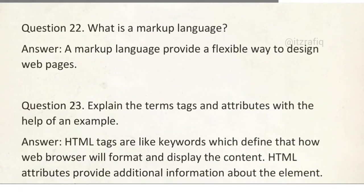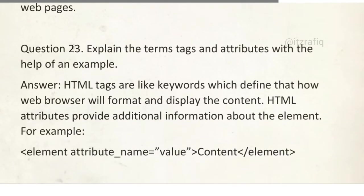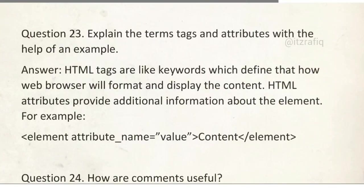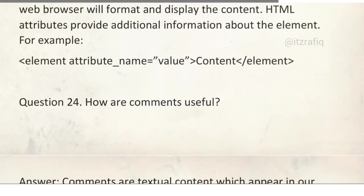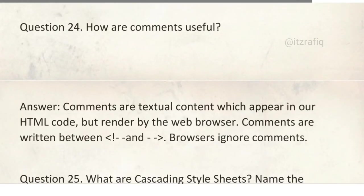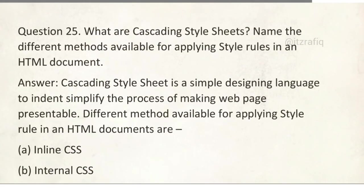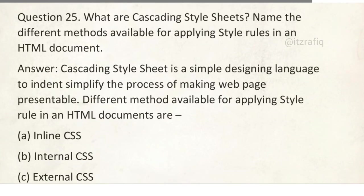What is cascade style sheet? It is used to design web pages. And what is the use of CSS? It controls the web page in a simple and easy way and provides some additional features to HTML. What is markup language? A markup language provides a flexible way to design a web page. Explain tag and attribute. You can see here. How comments are useful? Question 25: What are cascading style sheets? Name the different modes available for applying style rules in an HTML document. The answer is here.